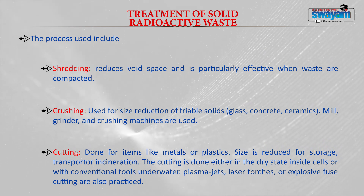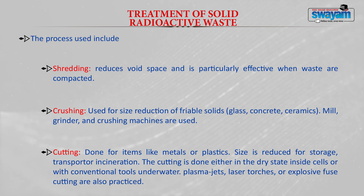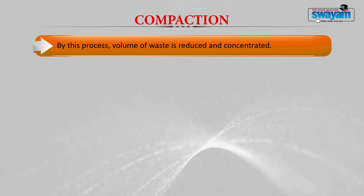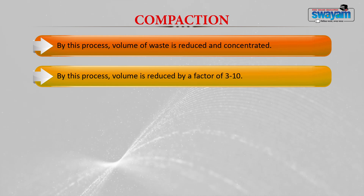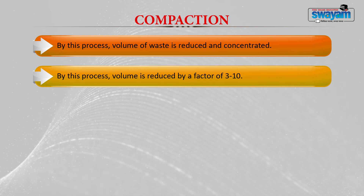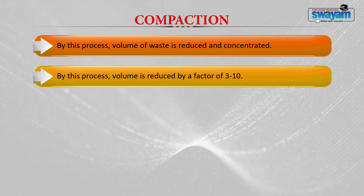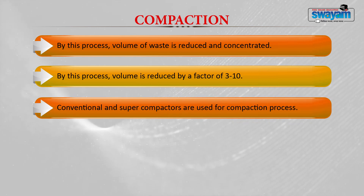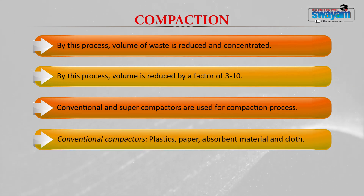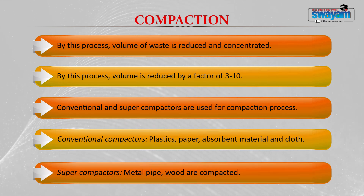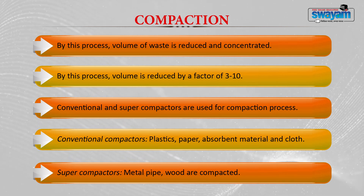By compaction, the volume of waste is reduced and concentrated. The volume is reduced by a factor of 3 to 10 — for example, 100 kg of radioactive waste may be reduced to 10 to 30 kg. Conventional compactors are used mainly for plastic, paper, absorbent material, and clothes contaminated with radioactivity. Super compactors are used for compaction of metal pipes, wood, etc.